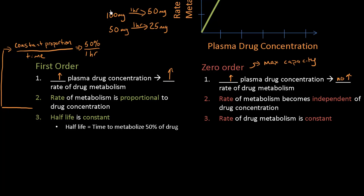At a higher dosage we expect a higher rate — I lost 50 mg in an hour. At a lower concentration I expect a lower rate — I lost 25 mg in an hour. So while the rate may not be constant, the half-life is. When you're in the clinic and look up drug monographs, you'll see the half-life listed, not the actual rate of drug metabolism.